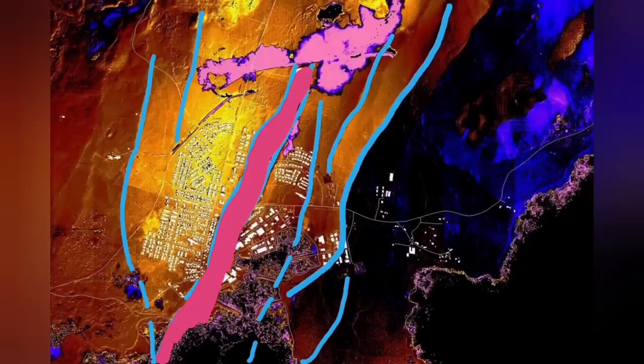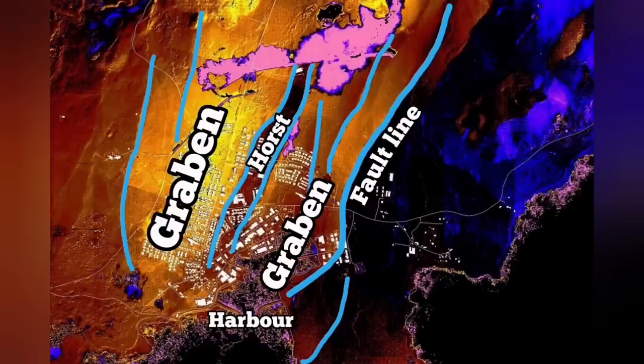Through this graben that you can see in the middle part, and the fault lines, and the horst in the middle, we had cracks in the Grindavik, but no eruption. Magma was not there.